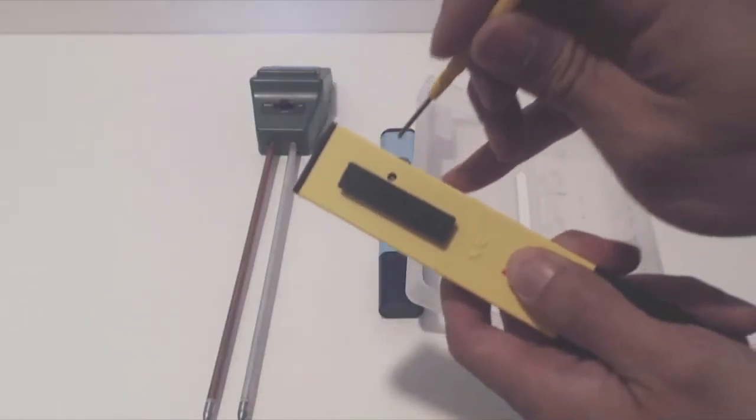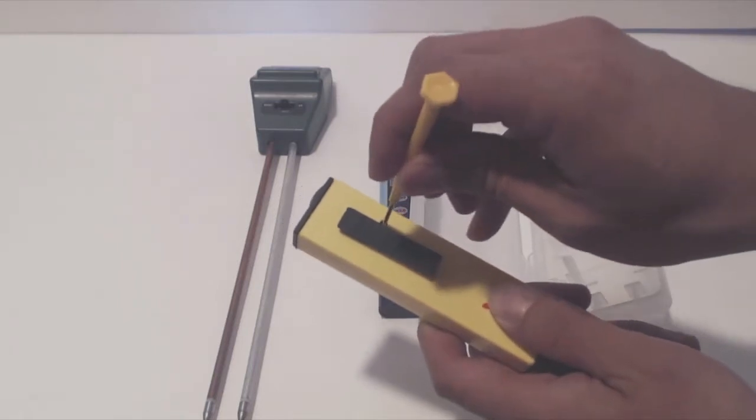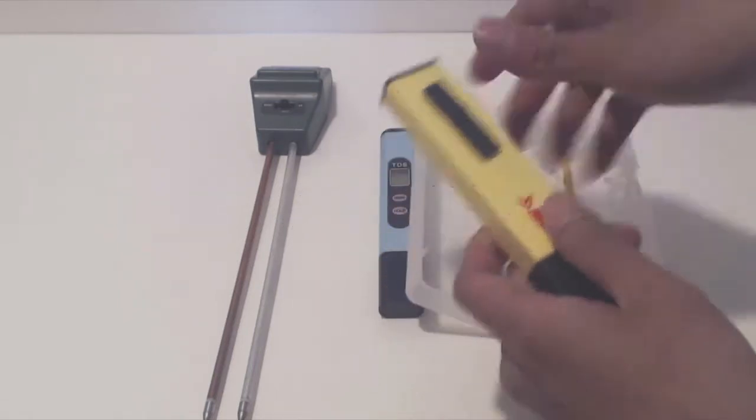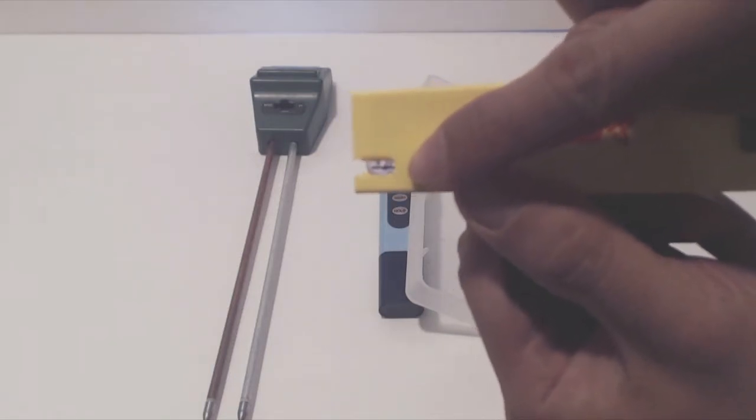If the reading is not correct, use the included screwdriver to turn the trimmer screw on the back to adjust the meter until the reading is correct. Instructions on this process are included. Do be careful not to touch the electrode, because it is a very fragile thin piece of glass.